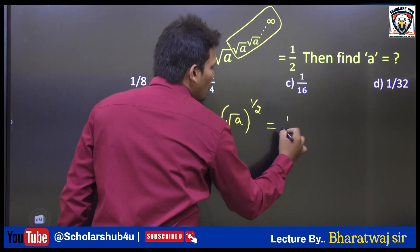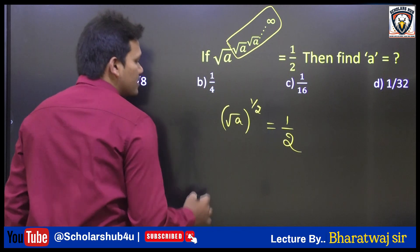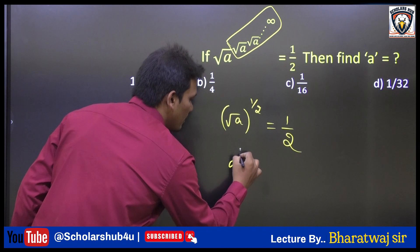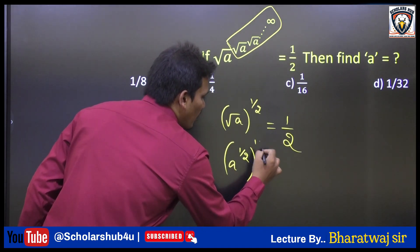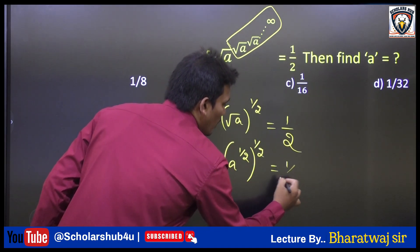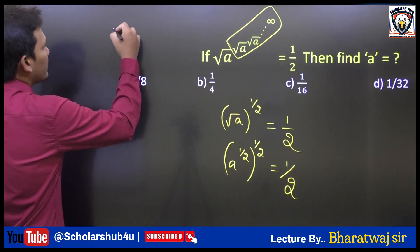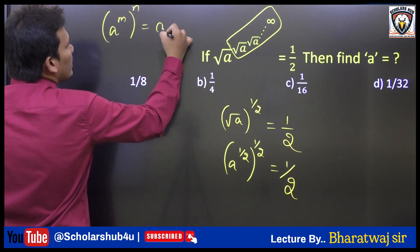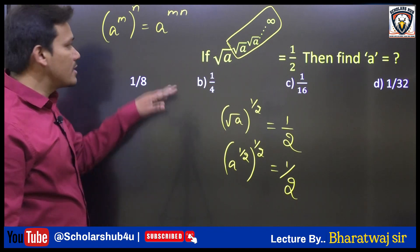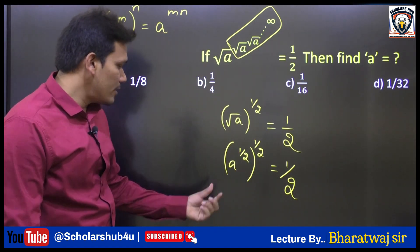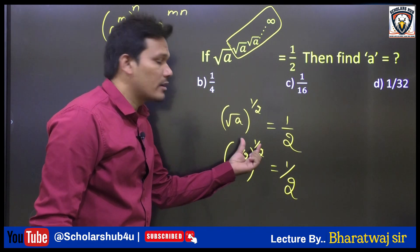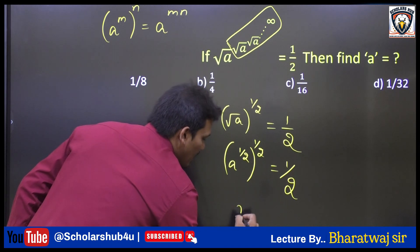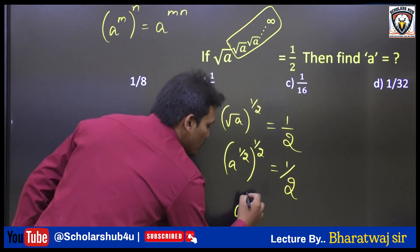The meaning of root is 1 by 2, so we can write: a power 1 by 2, whole power 1 by 2, is equal to 1 by 2. There is an identity: a power m, whole power n, is equal to a power mn. I'm going to use this identity to solve this problem.